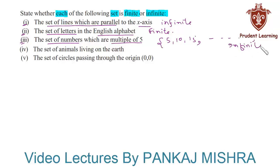The set of animals living on the earth. We know that the number of animals living on the earth is finite. Although the number is quite big, but still they are countable. So we will say that the set of animals living on the earth is a finite set.